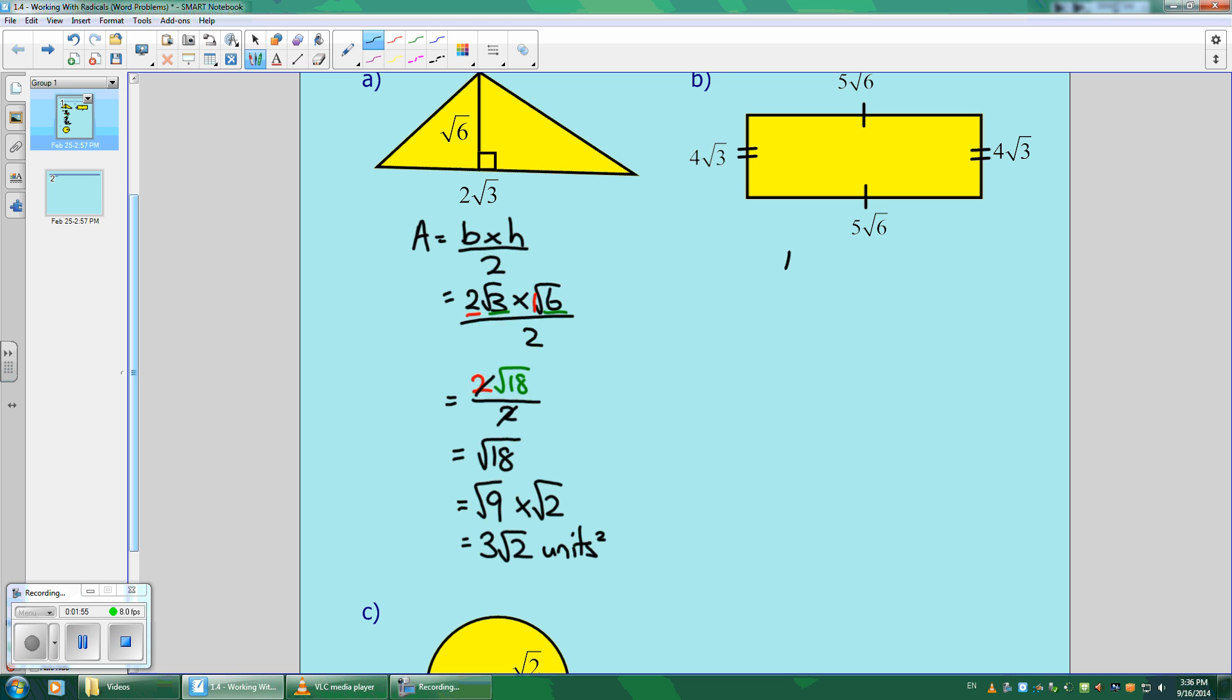Moving on to the rectangle, we have area equals length times width, which is 5 root 6 for the length and 4 root 3 for the width. Whole number times whole number gives me 20.